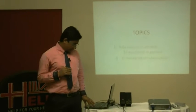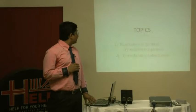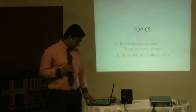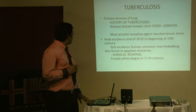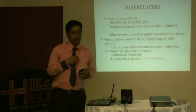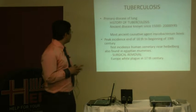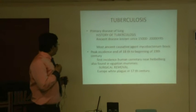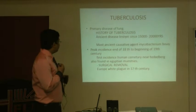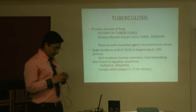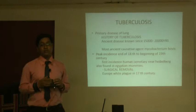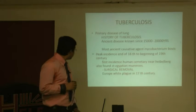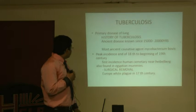We will cover three topics: tuberculosis in general, resistance in bacteria in general, and resistance in tuberculosis. Tuberculosis is a disease whose history goes back 15,000 to 20,000 years. It is primarily a disease of the lung, but it also affects the skin and the intestine. Secondarily it affects the brain, meninges, kidney, and probably all organs in the body.